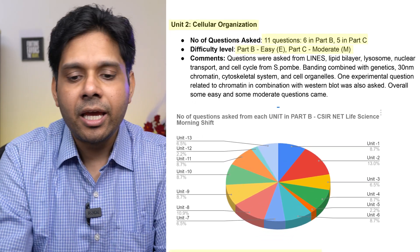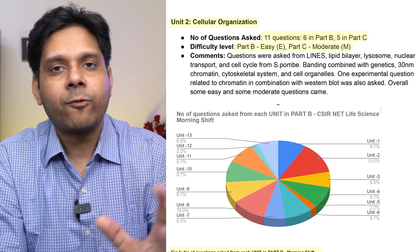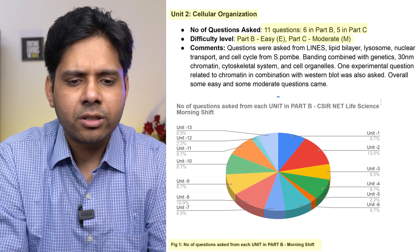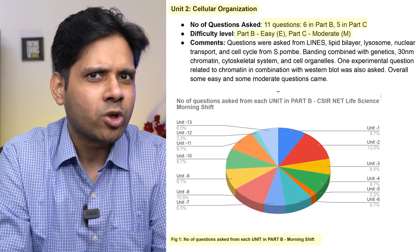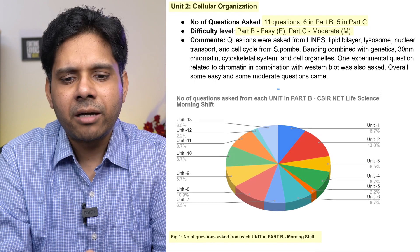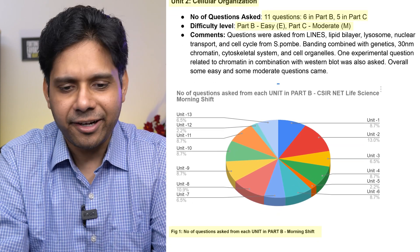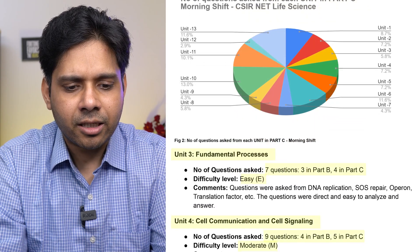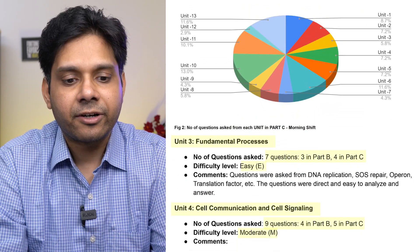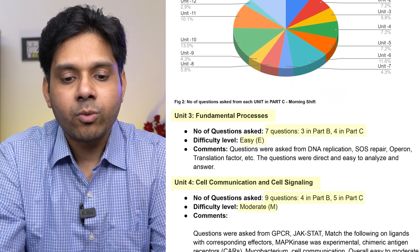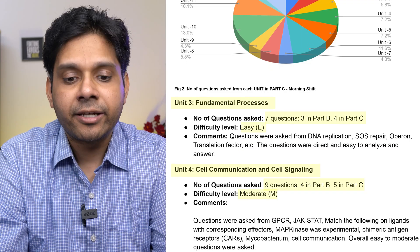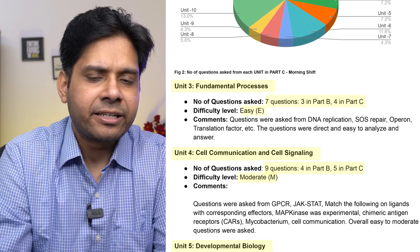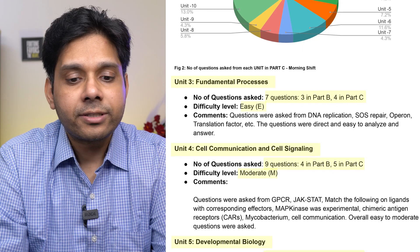For Unit 2, Cellular Organization, Part B was easy but Part C was moderate. Unit 3, Fundamental Processes, had seven questions: three in Part B and four in Part C. Difficulty level was easy.